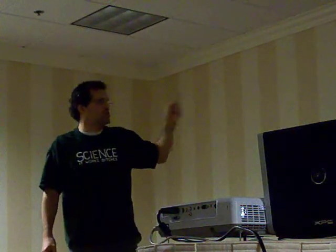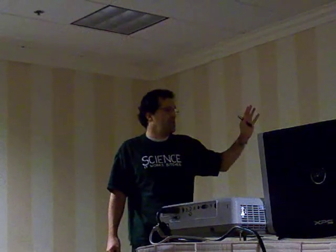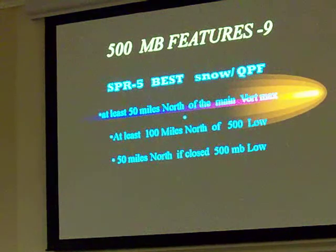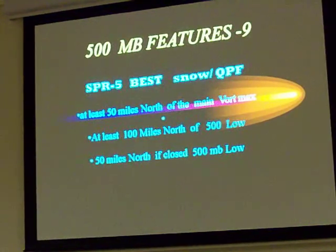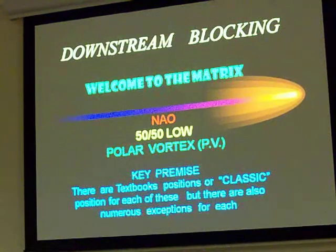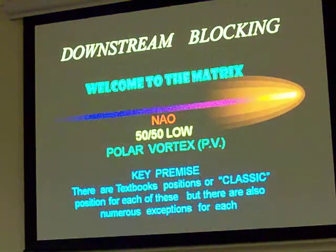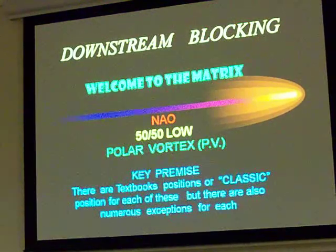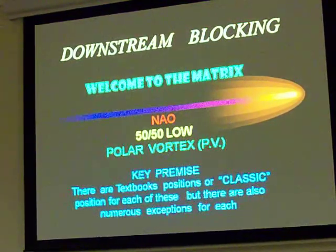The best snow in the QPF on Miller-B systems is at least 50 miles north of the main vort max, about 100 miles north of the 500 low, or 50 miles north of the 500 low if it's a closed, deep system with really big clippers coming out of Canada. Downstream blocking — welcome to the matrix. Downstream blocking is not just one thing; it's not the NAO, it's not the 50-50 low, it's not the polar vortex — it's all three combined together. There are textbook or classic positions for each one, but to get the pattern right you've got to look at all these together.